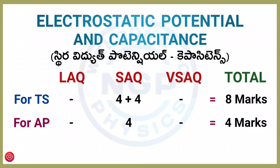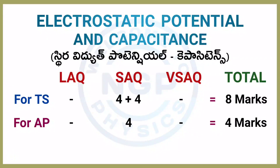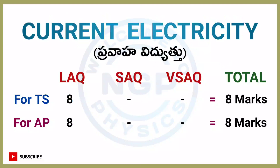Next chapter: Electrostatic Potential and Capacitance. TS students get two 4-marks questions and AP students get one 4-marks question.